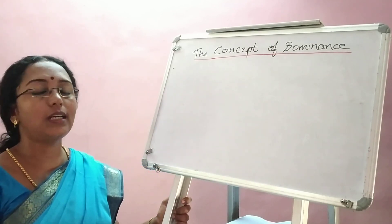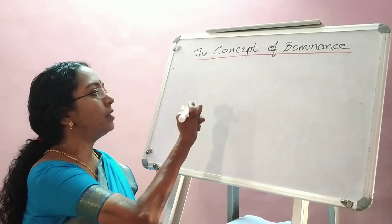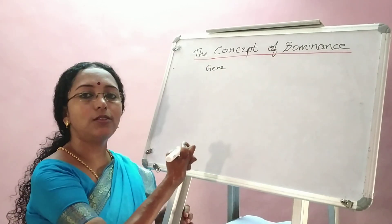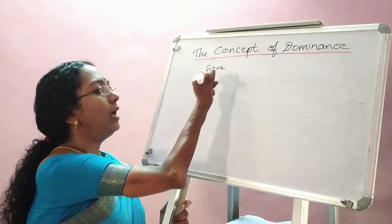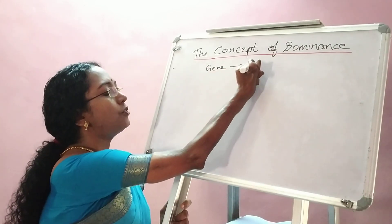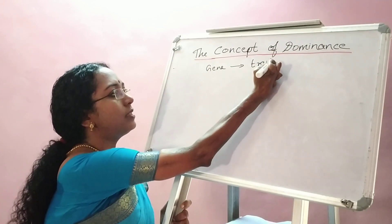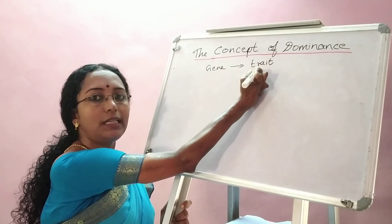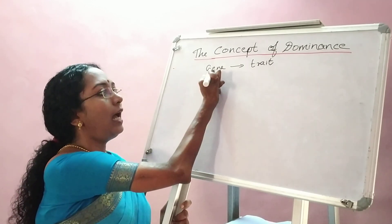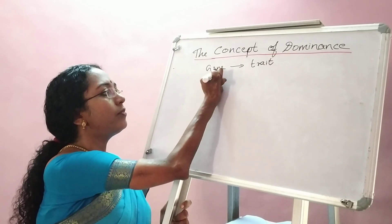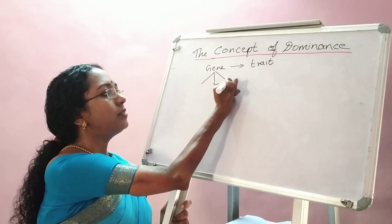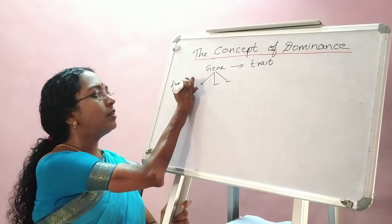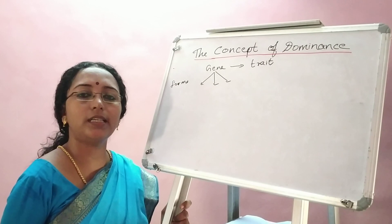Every organism has a set of genes — many genes — and every gene controls a character. In genetics, we usually use the word 'trait.' So every gene controls a trait, and this gene may have different forms. One gene can have many forms.